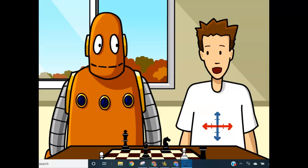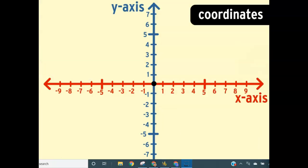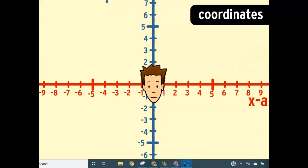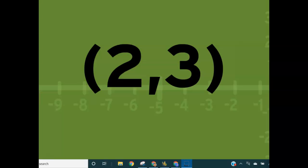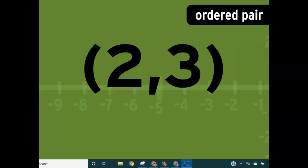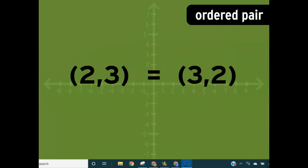Everything starts from the origin. The coordinates or the address of the origin are zero comma zero. That means to find the origin you have to move zero units horizontally and zero units vertically. The set of numbers that describes a point is called an ordered pair because the order of the numbers matters.